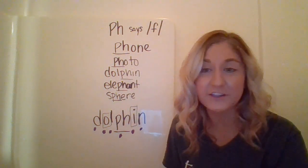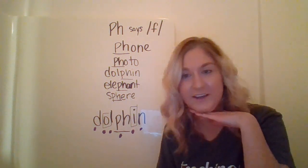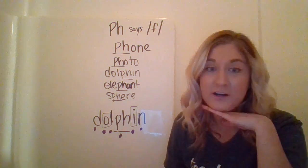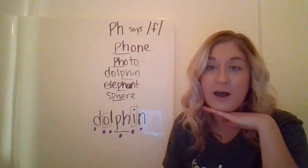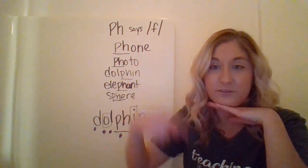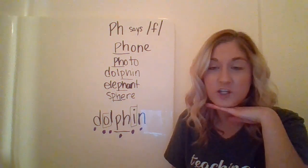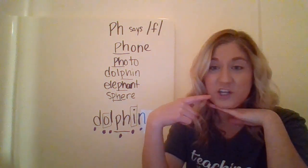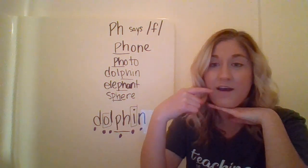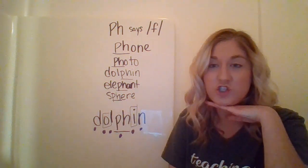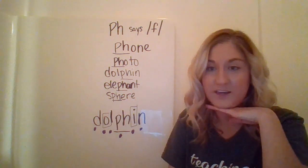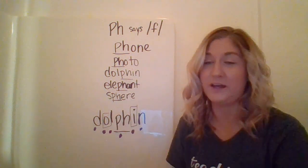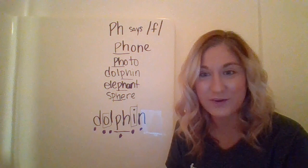Now I'd like you to put your hand under your chin with me. We're going to see how many syllables there are in the word dolphin — however many times your chin goes up and down. Ready? Dolphin. Watch my chin — see how my chin goes down on 'doll' and then back down on 'fin.' Dolphin. So I know that it's two syllables because my chin went down twice.